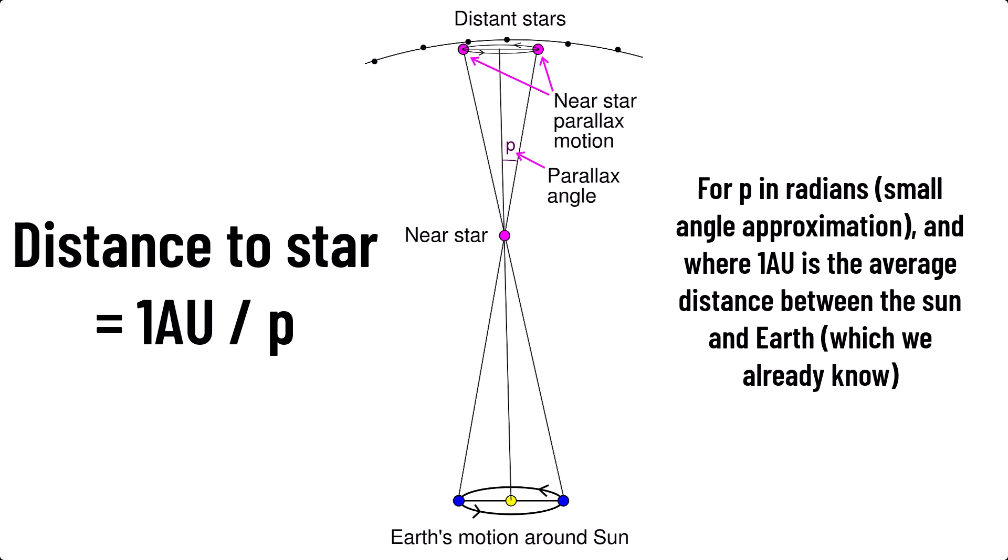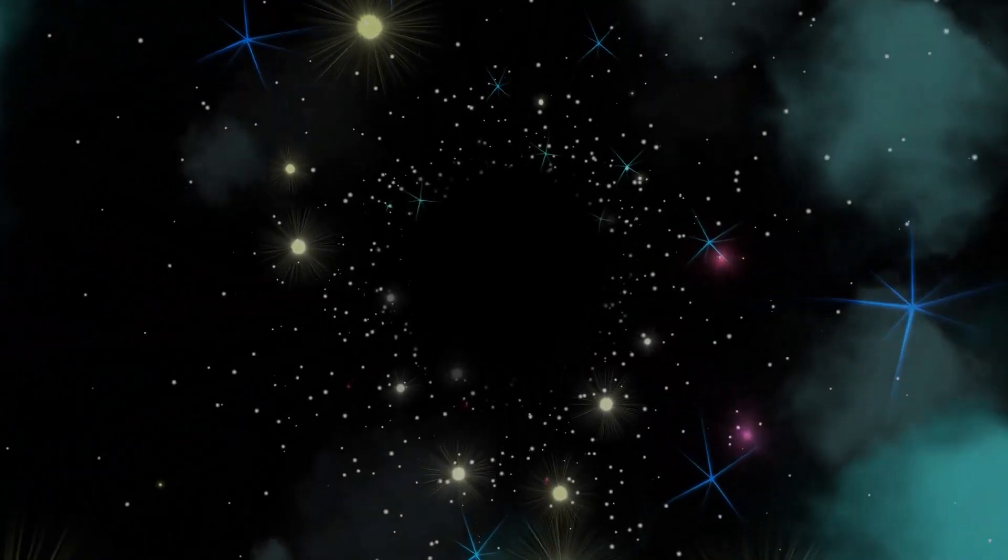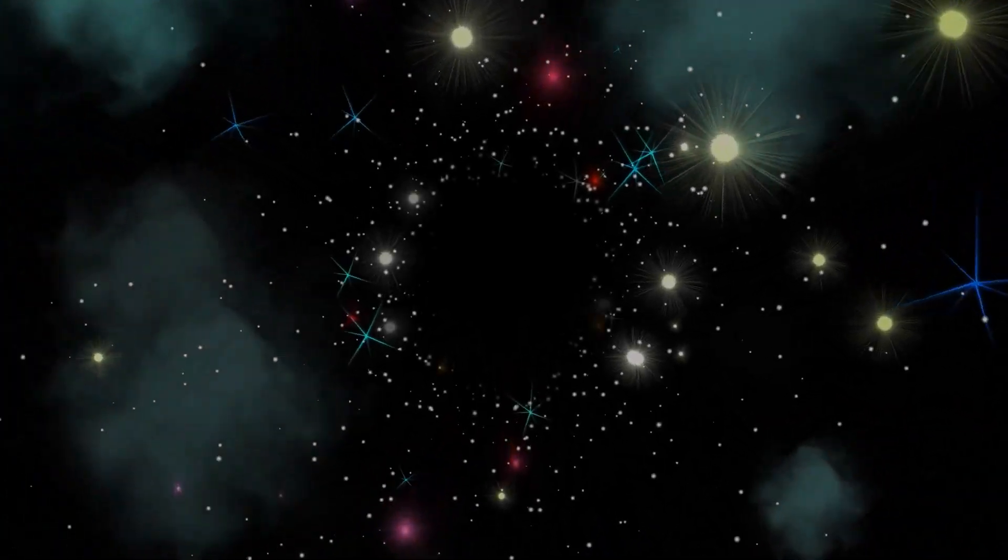This method gets less accurate the further away the stars are as they shift less and less the further you go out and it's much harder to accurately detect the parallax. Much like how really far away objects don't seem to move when looking at them from each eye separately. So now we have an easy way to find distances to nearby stars. Let's go out further.